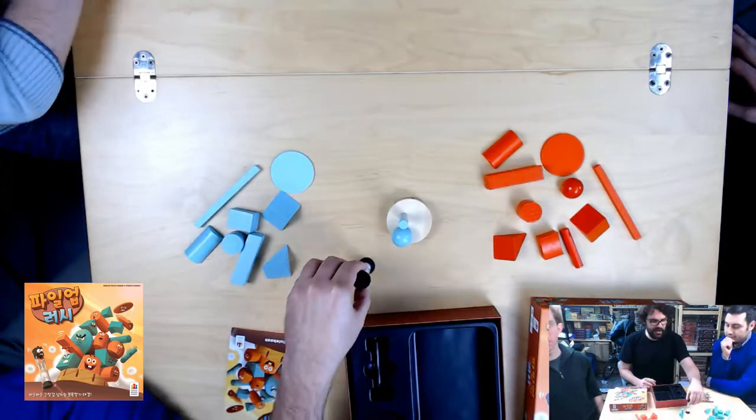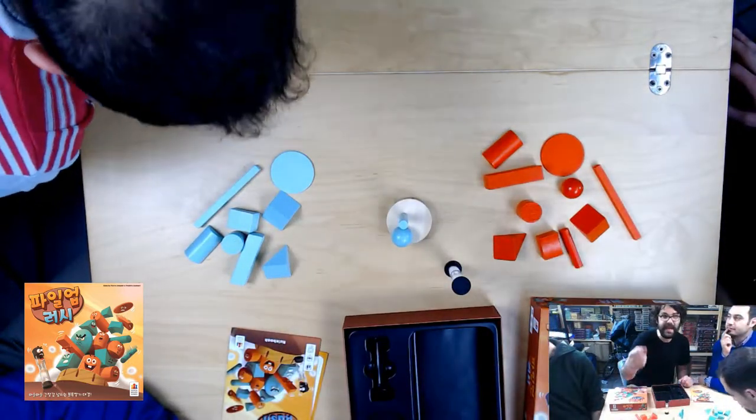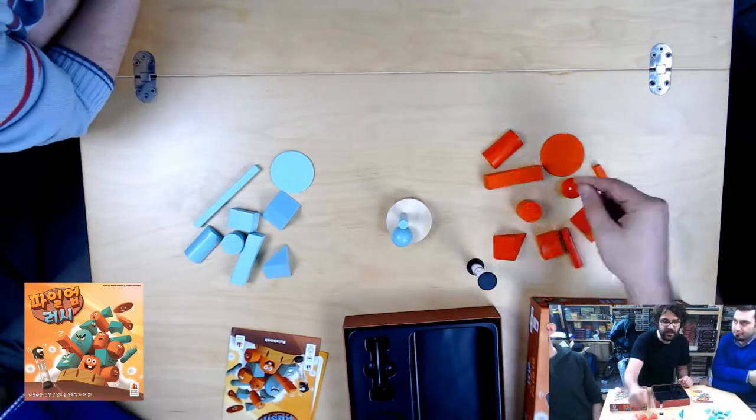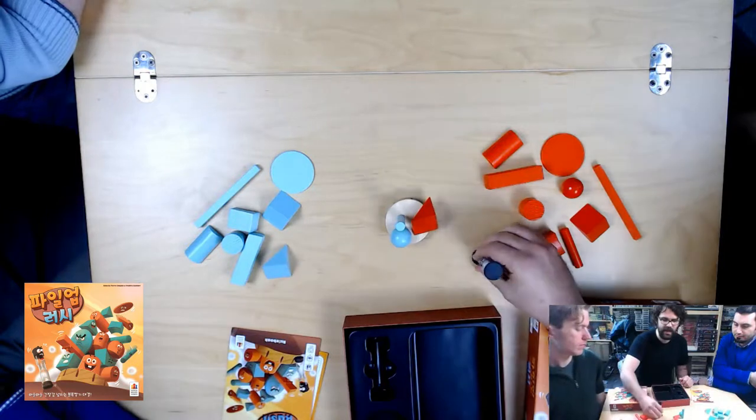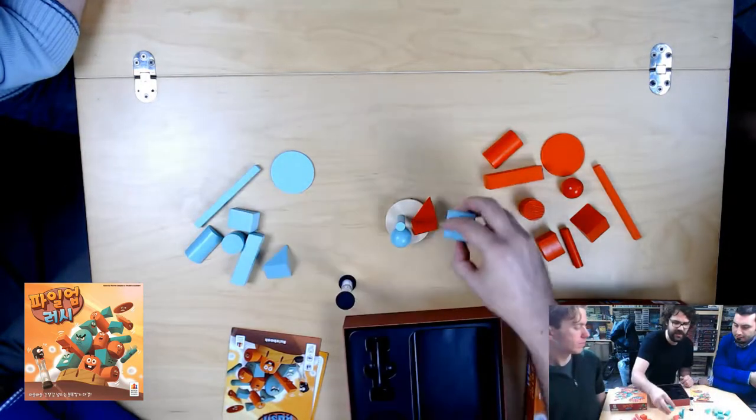Once you do that, you're going to flip the timer, and then it's the other person's turn, and then they have, until the timer runs out, to stack things. Or they could stack one, and flip it, and now it's the other team's turn. That's pretty much how it goes.